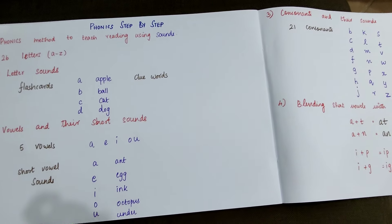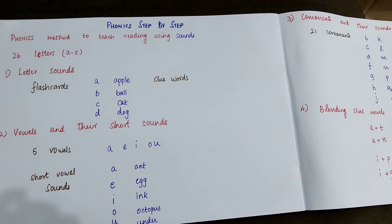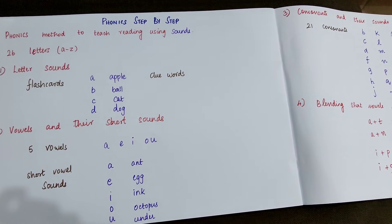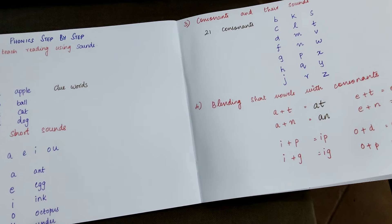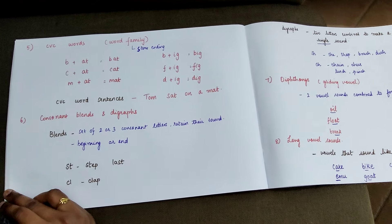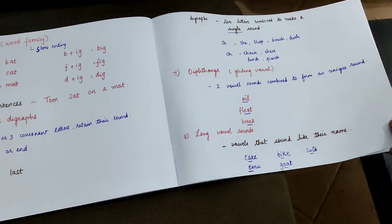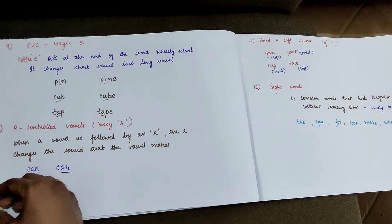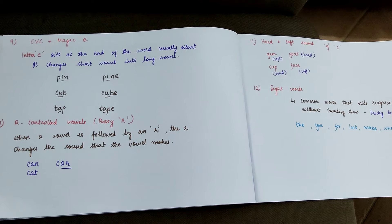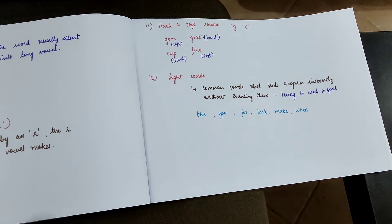So these are the ten steps in teaching phonics. It's teaching letter sounds, vowels and their short sounds, consonant and their sounds, blending short vowels with consonants, CVC words, consonant blends and digraphs, diphthongs, long vowel sounds, magic e rule, R-controlled vowels, hard and soft rule, and sight words.